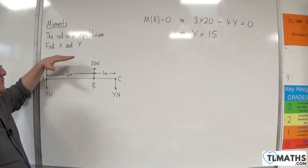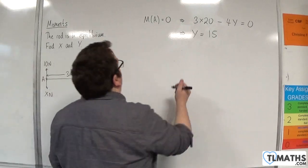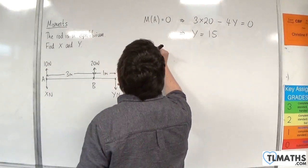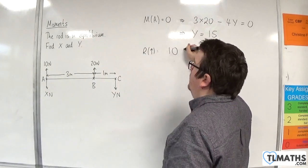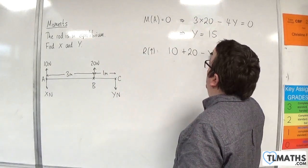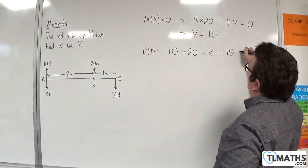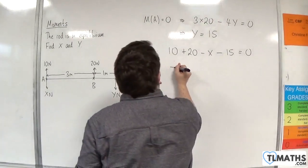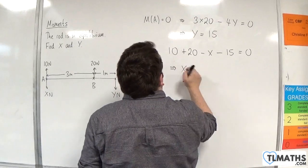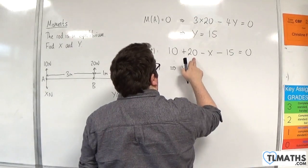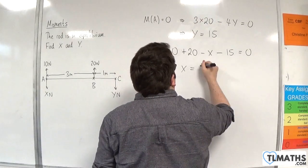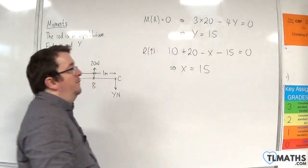Now we can resolve forces. Resolving forces taking upwards as positive, we have 10 plus 20 take away X take away Y, which is 15, must equal 0. 10 plus 20 is 30, take away 15 is 15, so X must also be 15.